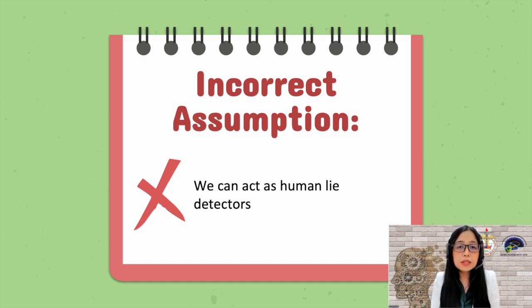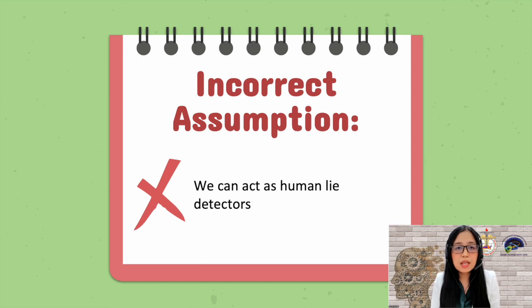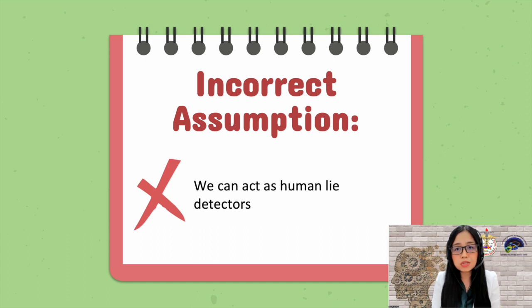Remember, not all evaluees who say incorrect things or omit truths are necessarily malingering. It may be because of psychopathology, such as dementia or a psychotic process. Malingering and a psychiatric diagnosis are not mutually exclusive — a person with a psychiatric disorder may exaggerate symptoms, or a person with the intention to deceive may also have a psychiatric condition.